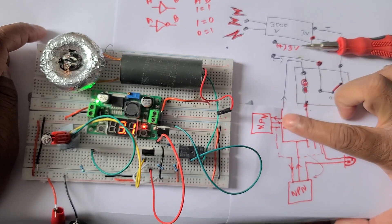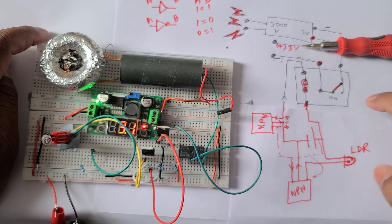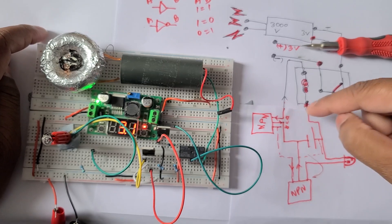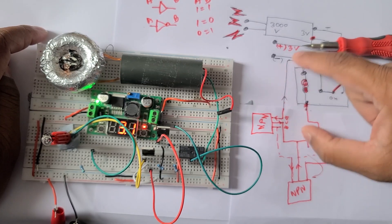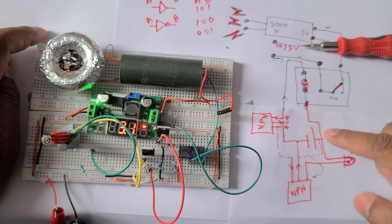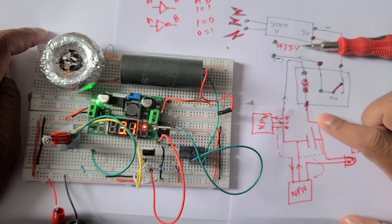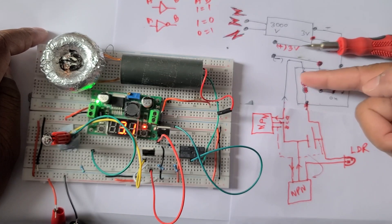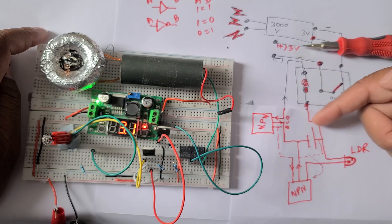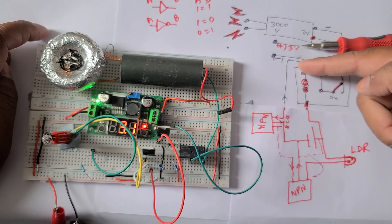Here you can see the first NPN transistor TIP41C, this one, it gets switched on from the relay side. So plus 10 volt is injected here, it goes there and it excites this magnet. To excite this, the circuit needs to be completed, so plus 10 volt is going this way and ground is coming this way.